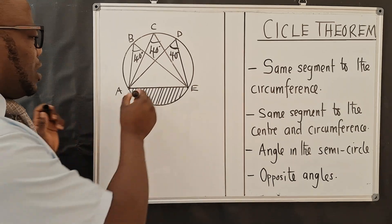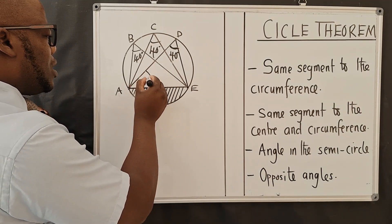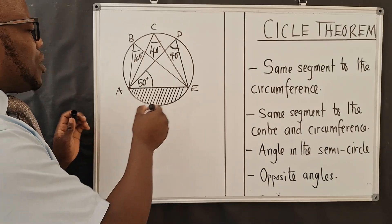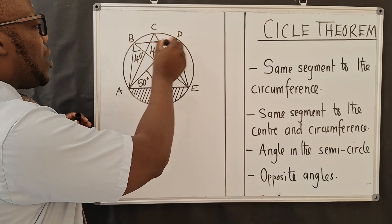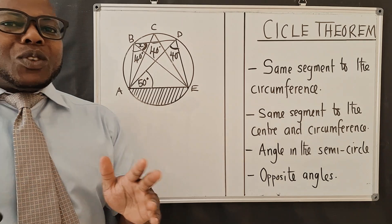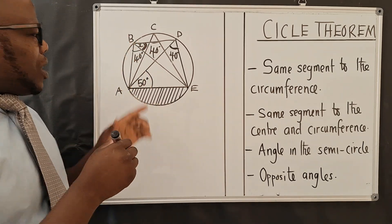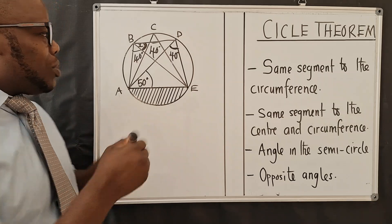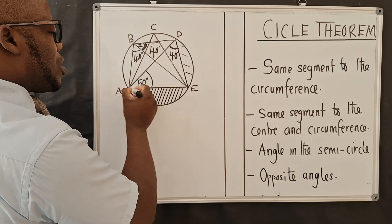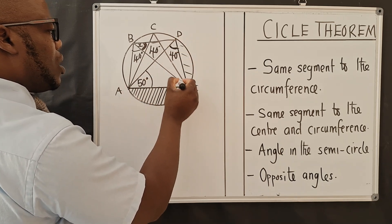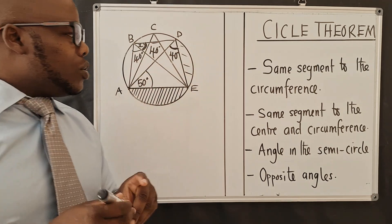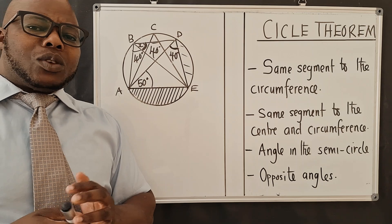Now look at this. Let's say the angle here is 50 degrees, and in an exam the examiner wants you to find angle X. The angle at A will be 50 degrees, because this is the chord and this is the segment. This angle goes from here to A and then to D, and this one goes from here to B and then back to D. So this angle will be equal to that angle using property number one.